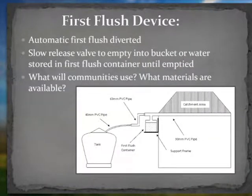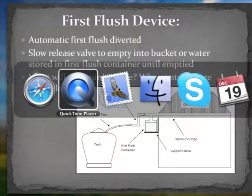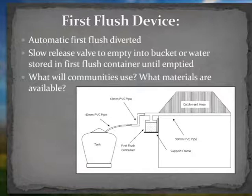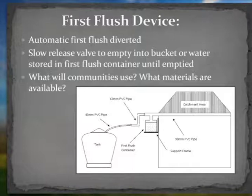Four basic designs of first flush devices are recommended in the final report. Two designs involve a slow release valve that allows water to slowly drip out into a bucket, whilst the other two designs collect water which should be emptied after the rainfall event. The important aspects of these designs are that the first flush is automatically diverted and this water is captured to be used on lower quality demands. Further investigation and piloting of a design in Nepal is needed to ensure families will actually use the design.